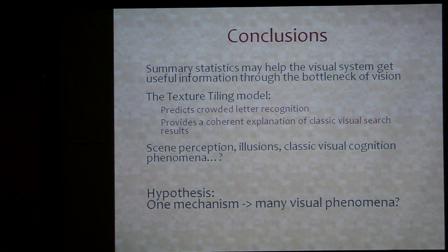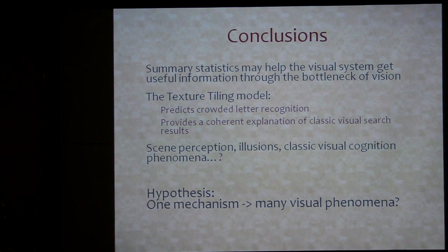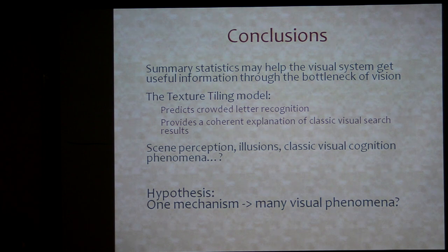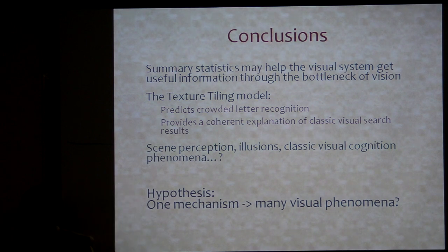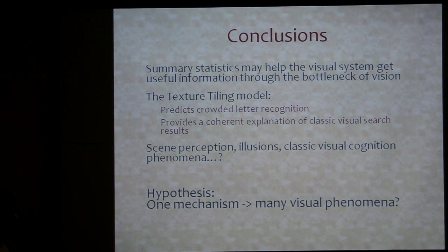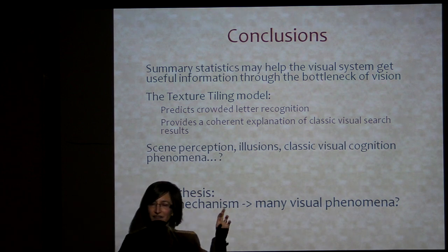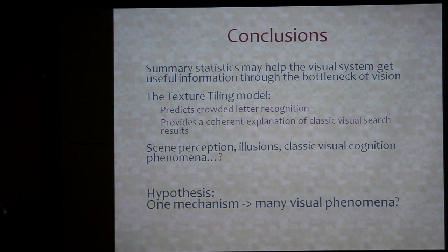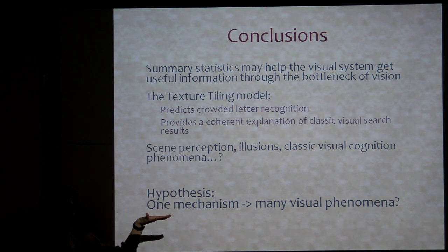We're suggesting here that summary statistics may be a really useful way for the visual system to shove as much useful information as it can through what seems to be a bottleneck in vision. A model based on this — with a certain set of summary statistics and pooling over progressively bigger regions as you go into the periphery — can predict these weird effects of essentially losing information and having trouble with crowded letter recognition, and can provide a coherent explanation of a bunch of visual search results. The particularly interesting ambitious hypothesis is that this weird quirky representation might be the key determinant of an awful lot of visual performance, and one mechanism might really underlie a very wide range of visual phenomena.